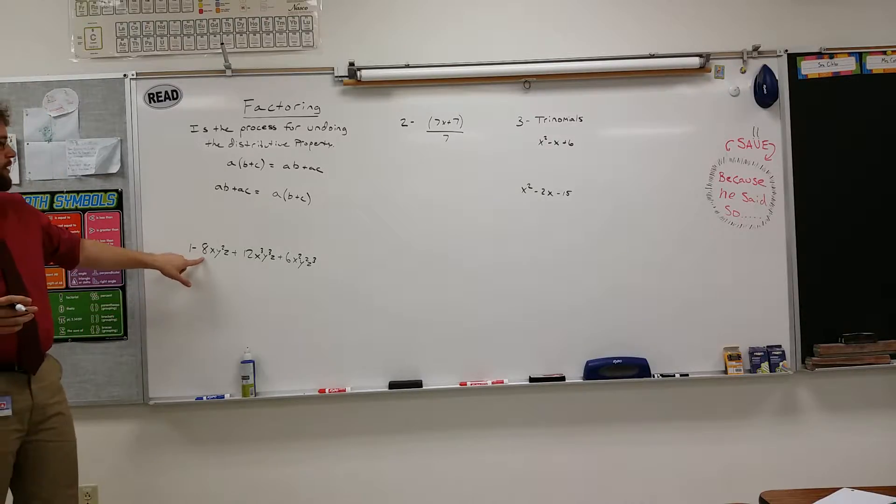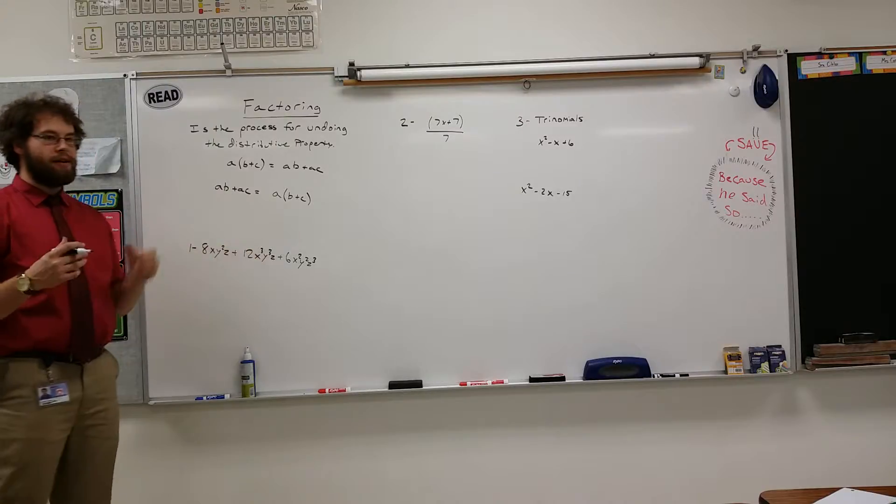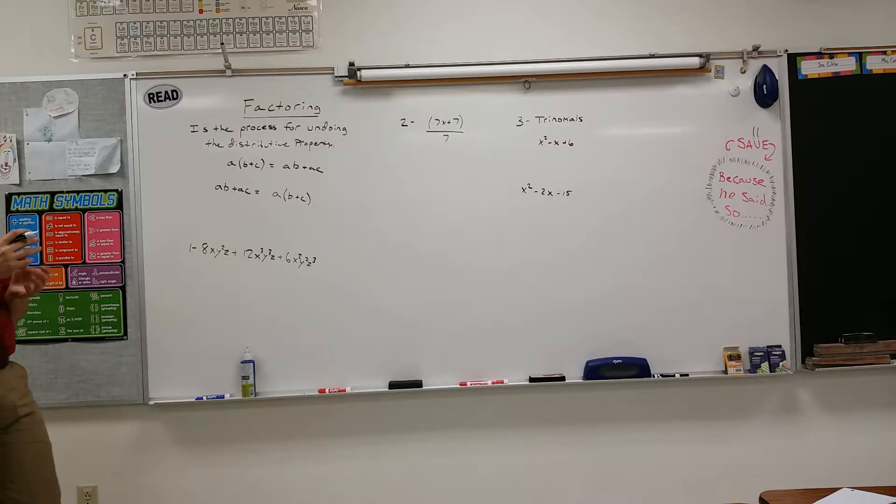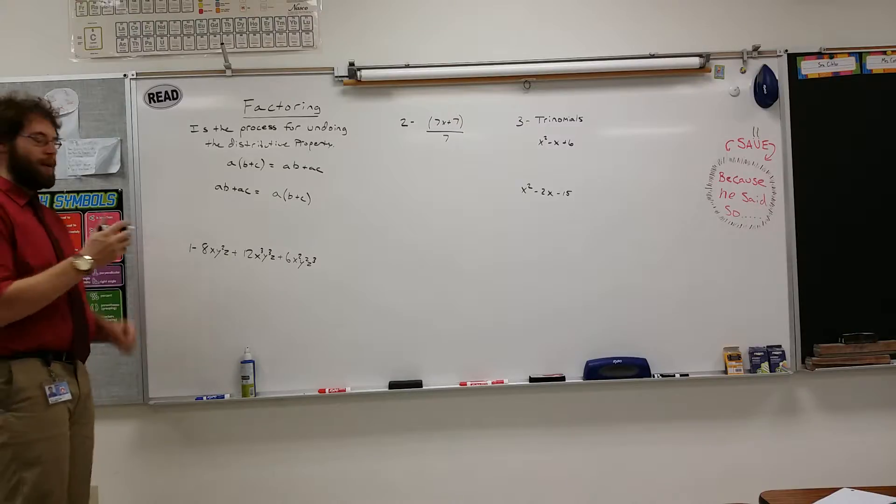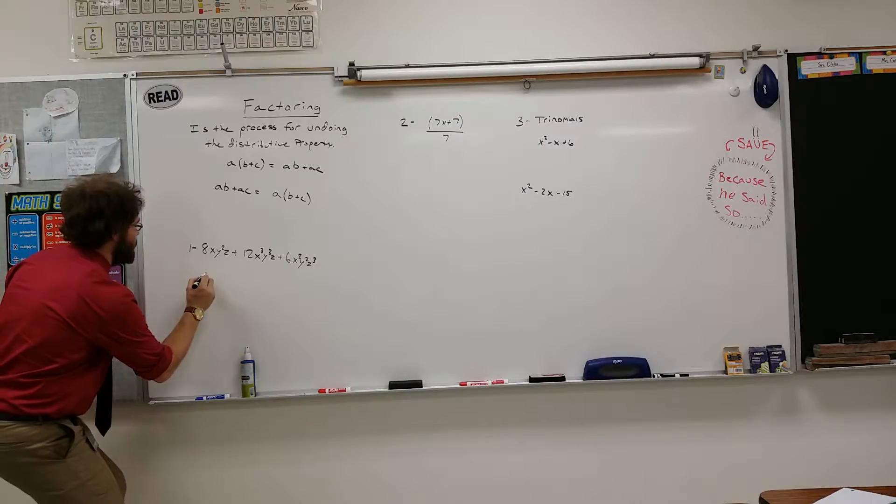So for instance in the numbers here, we've got 8, 12, and 6. The greatest common factor for that is 2. It's the highest number you can divide out of those numbers. So our greatest common factor for the numbers is 2.